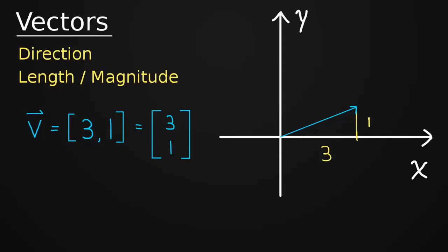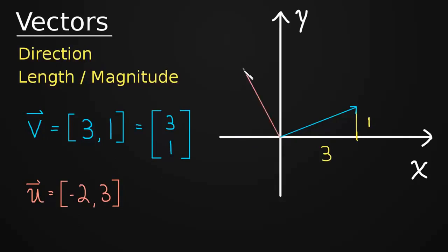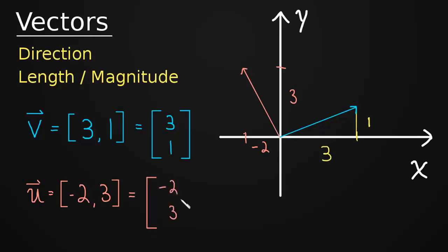Let's look at another example — the vector U with components (−2, 3). That simply means we're moving over negative 2 in X and up 3 in Y, so maybe something right around here. This would be 3 in Y and negative 2 in the X direction — there's our vector. And of course we could write this as a column vector, (−2, 3).